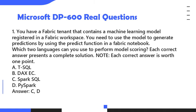Question 1. You have a Fabric tenant that contains a machine learning model registered in a Fabric workspace. You need to use the model to generate predictions by using the predict function in a Fabric notebook. Which two languages can you use to perform model scoring? Each correct answer presents a complete solution. A. T-SQL, B. DAX, C. Spark SQL, D. PySpark. Answer: C and D.